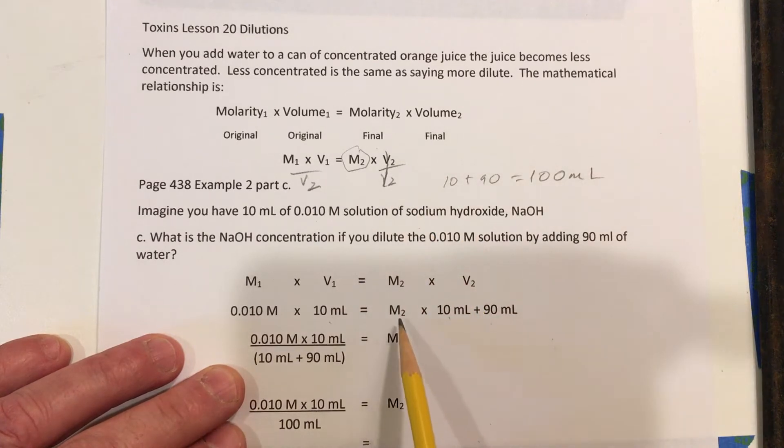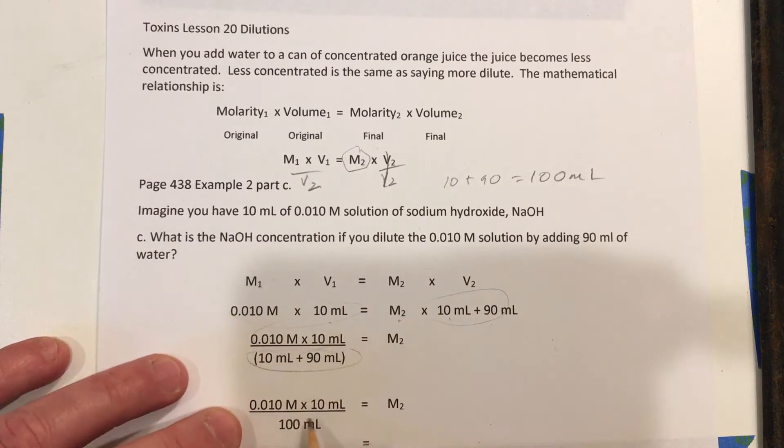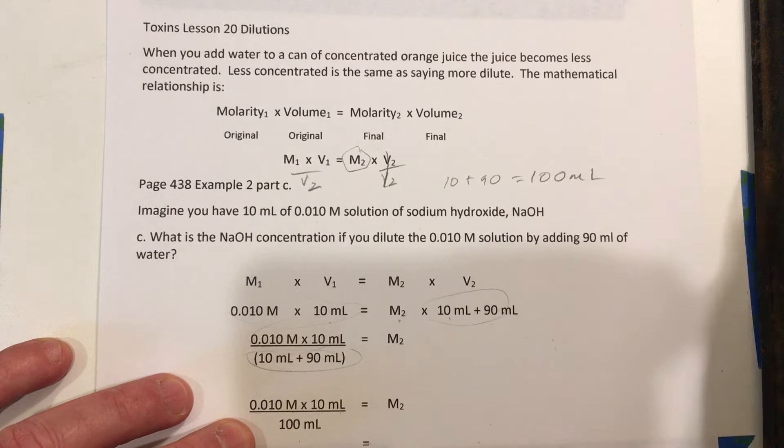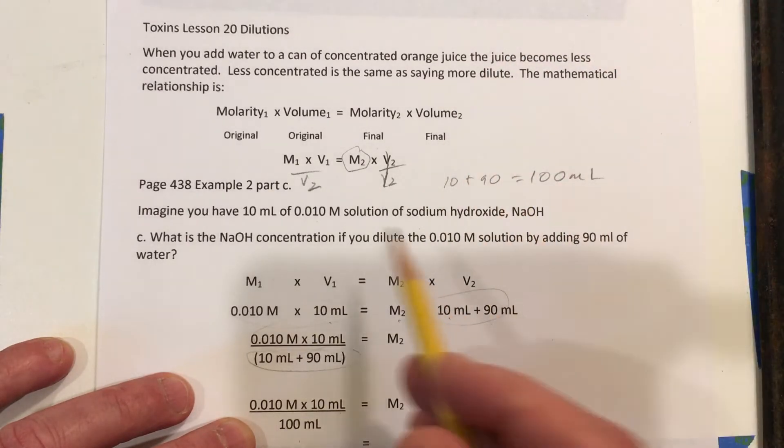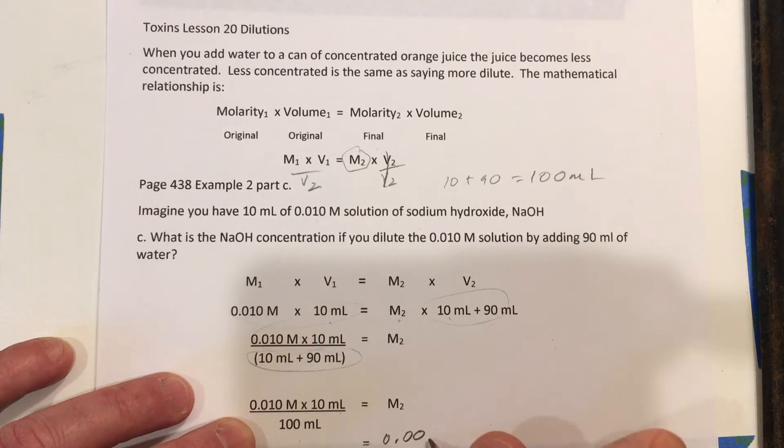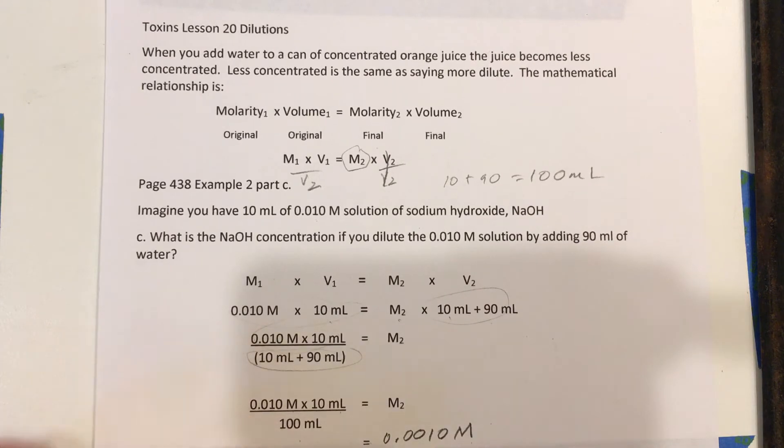So I want to get M by itself, so I have to move these two underneath these two here. And when I add them up, I end up with 0.010 molar times 10 milliliters divided by the total 100 milliliters. So I'm going to do 0.010 times 10, and then divide it by 100. And that gives me 0.001. So you can see this answer is one-tenth of that answer there. So we went from 0.010 to 0.0010 is the new molarity.